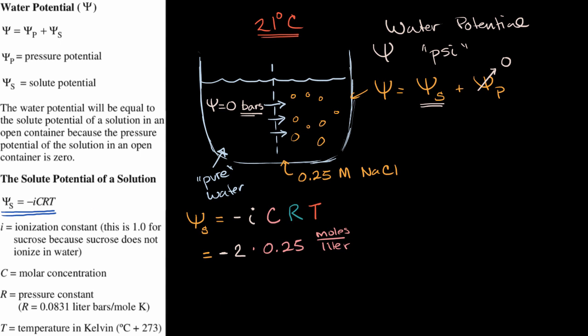And then we're going to multiply that times our pressure constant, which is the same as the ideal gas constant. And that is going to be—they give it to us right over here—0.0831 liter bars per mole kelvin.